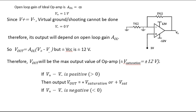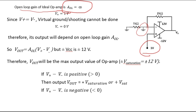Since the question tells us this is an ideal op-amp, an ideal op-amp has an open loop gain equal to infinity. The non-inverting terminal is having 1 volt potential and the inverting terminal is having 0 volt potential. So V+ equals 1 volt and V− equals 0 volt.